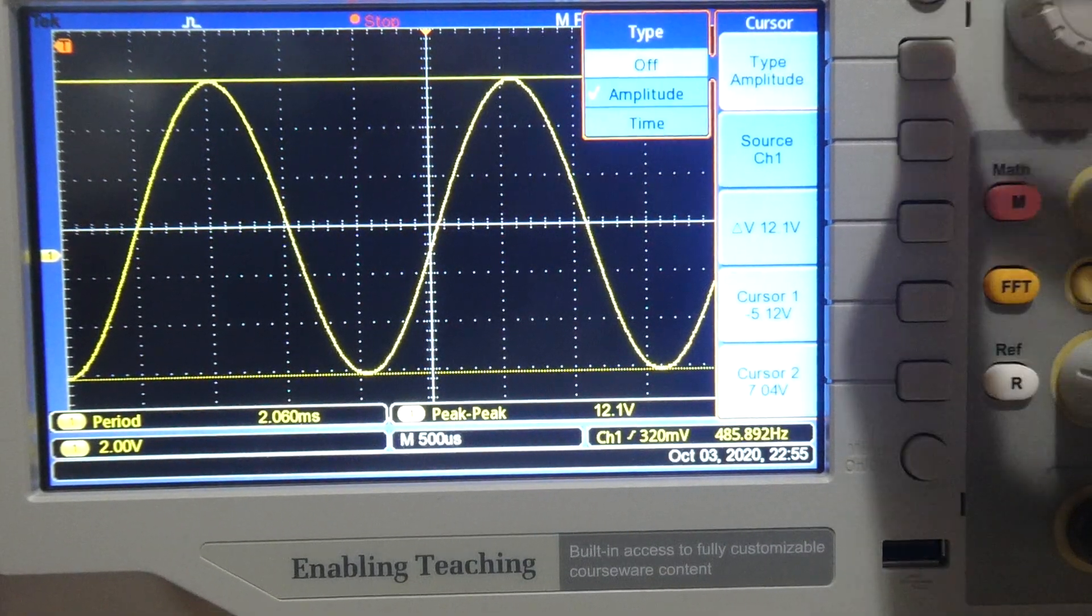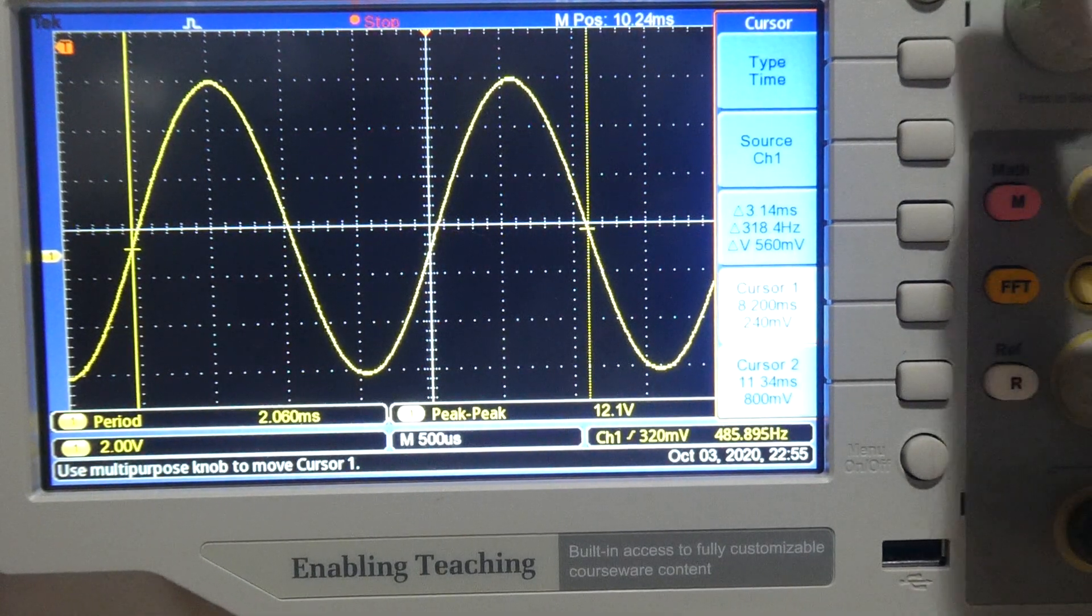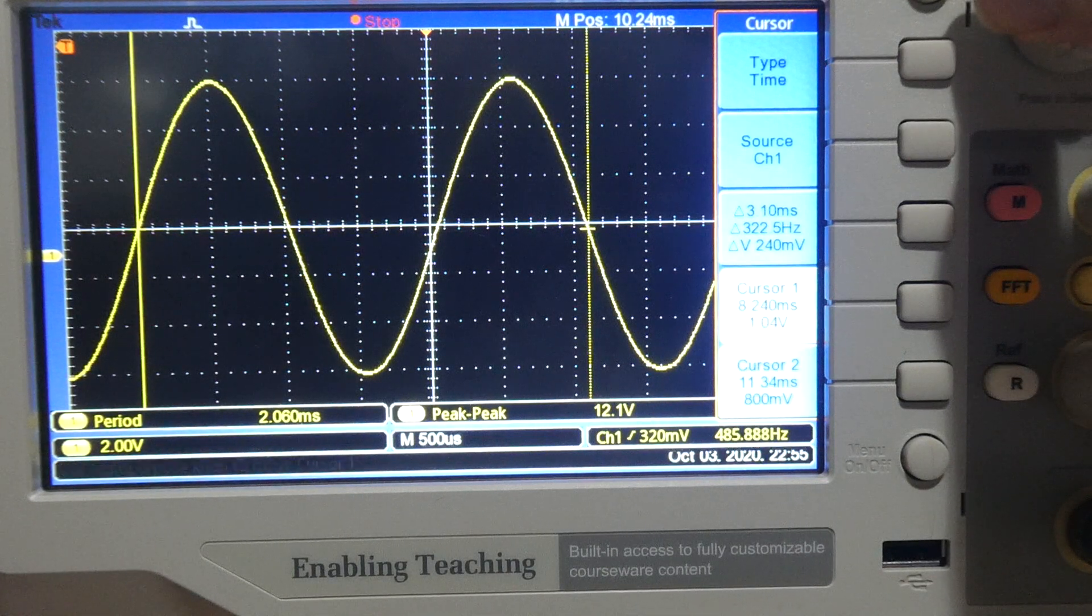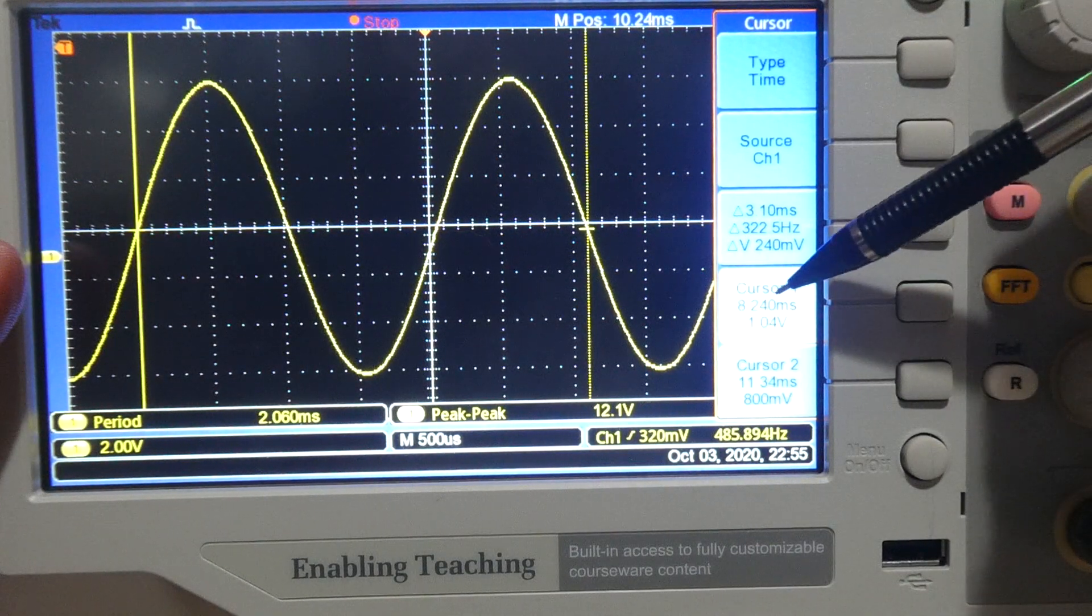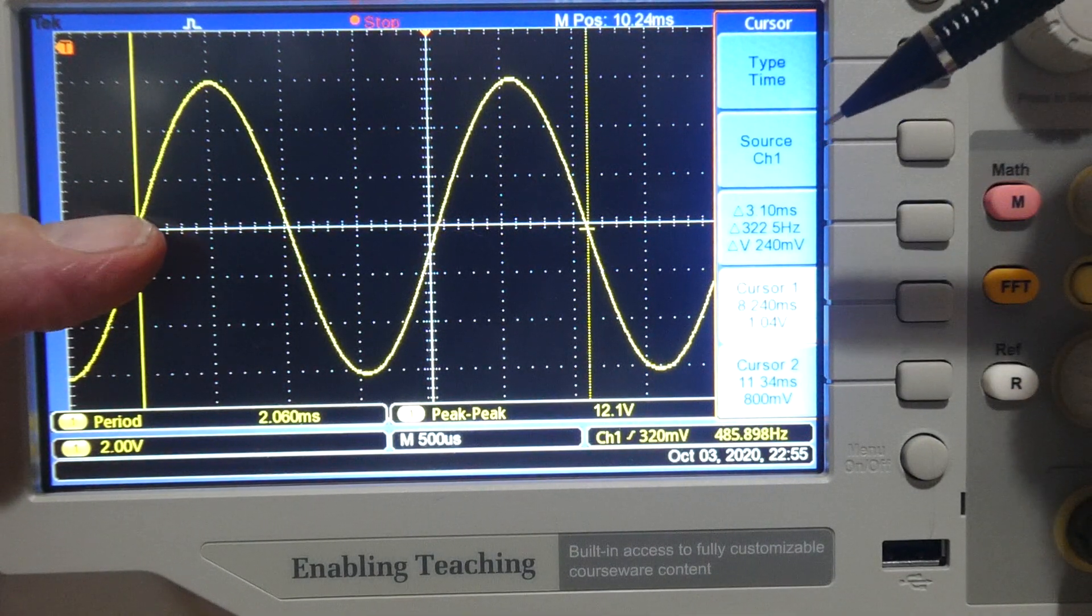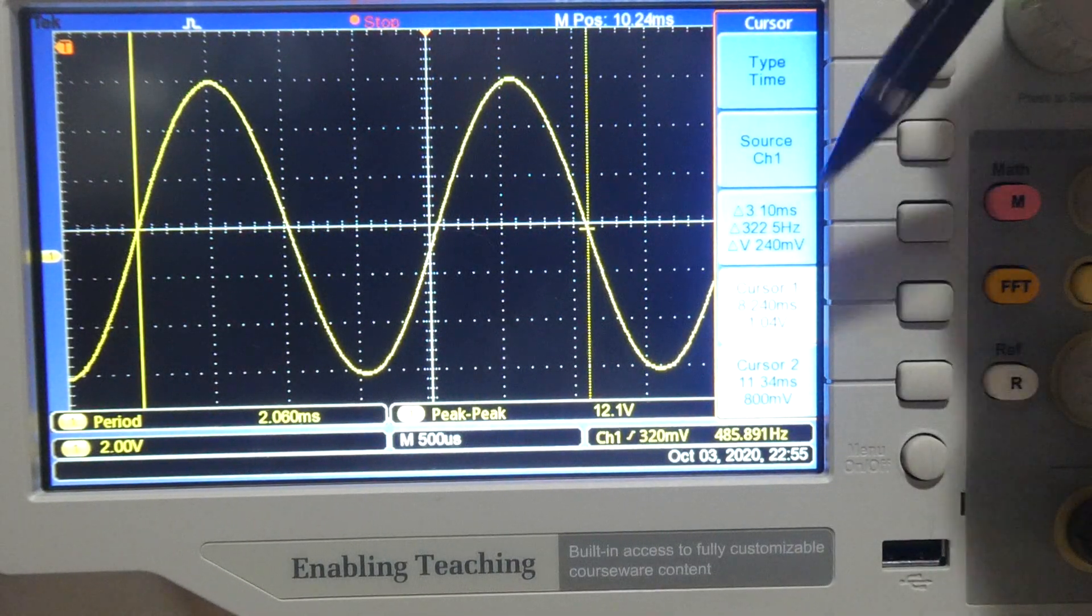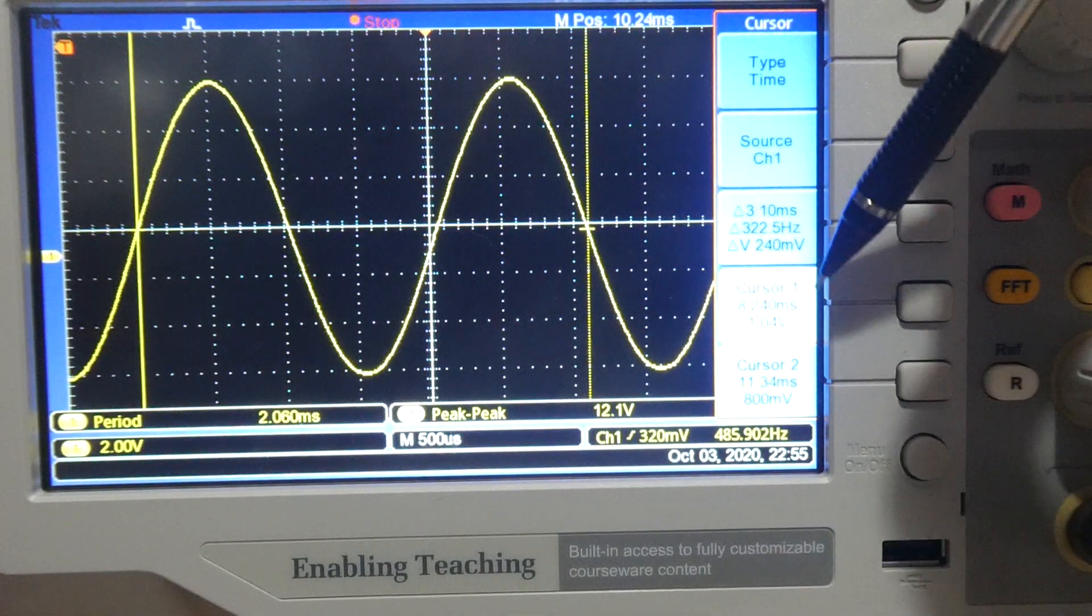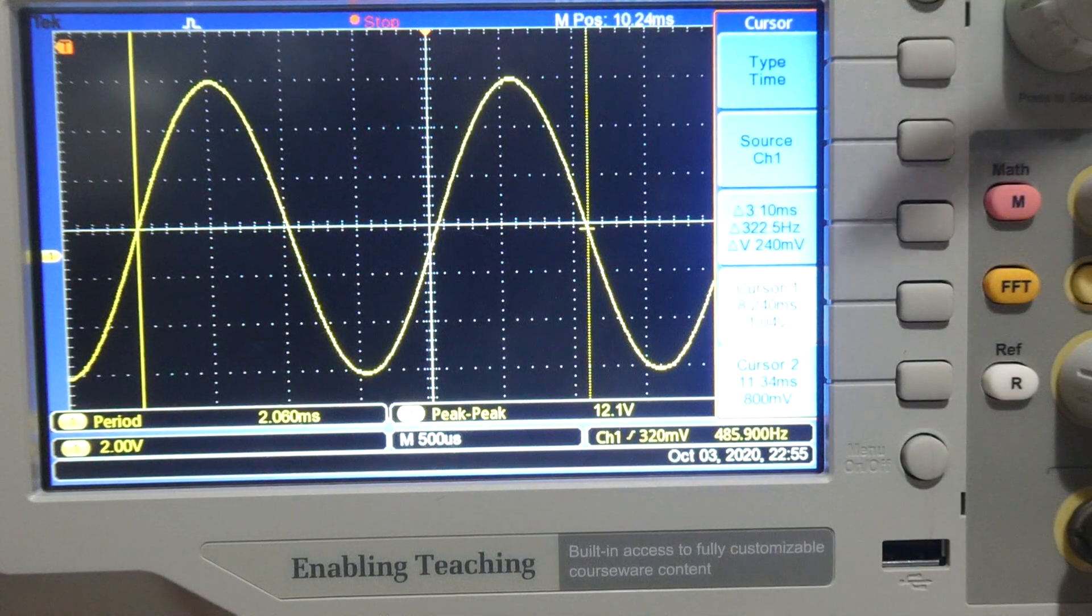So now if I select time, and now I can move my cursors about. So my first cursor for channel 1, if I take it at just over a volt in the horizontal position, then when I come to do the reading on the second cursor, if it's around about the same 1.04 volts, I'm in the same place on the waveform and that's where I need to be.